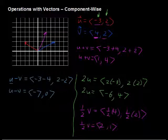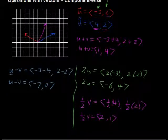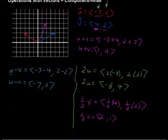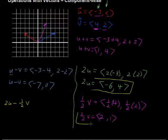Now let's put it all together. What if we wanted to figure out what is 2u minus one half v? Well, let's just take what we have here. This is the 2u and this is the one half v.